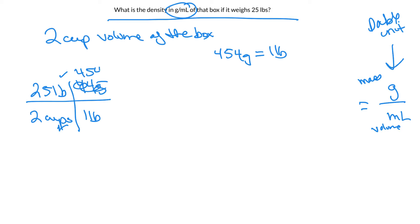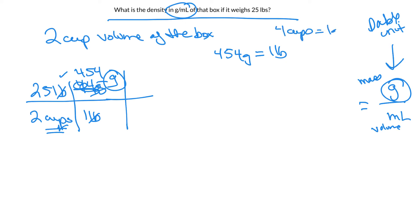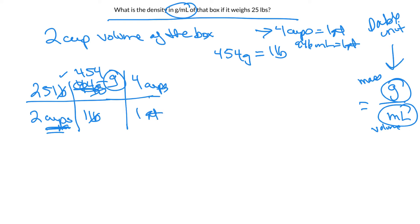It's 454 grams in a pound, so my pounds cancel and I'm at grams — that's what I wanted on top. Now I'm halfway through. I need to get from cups to milliliters, so I'll use some of those same equivalences from the last problem, just flipped around. There are four cups in a quart, and there are 946 milliliters in a quart. I can use those equivalences and my factor labeling skills to get rid of cups and build toward milliliters on the bottom.